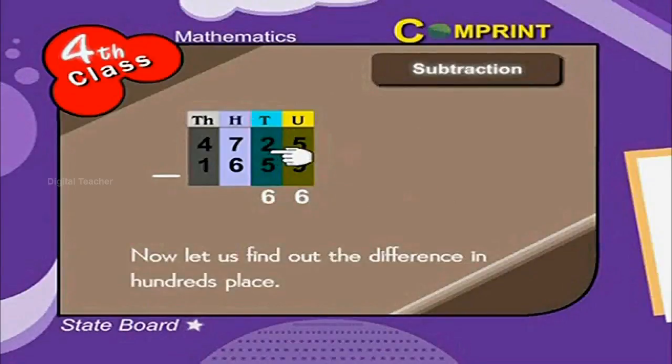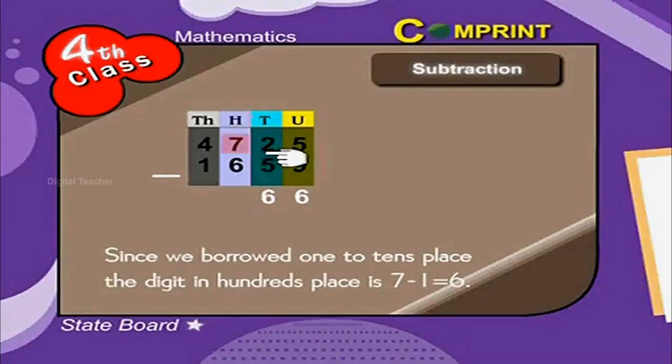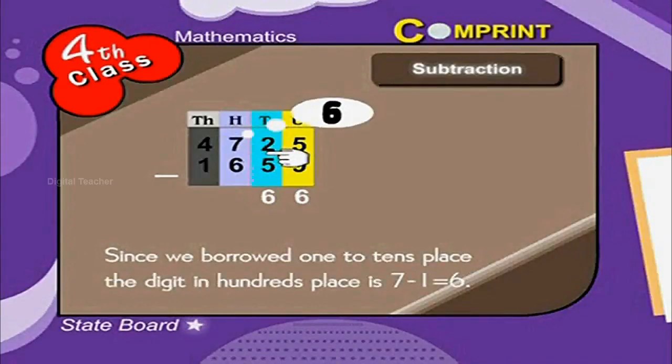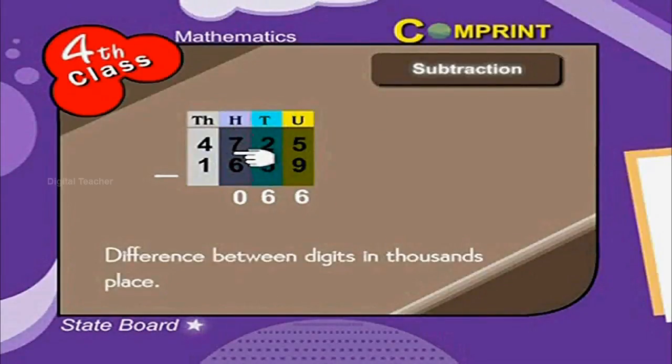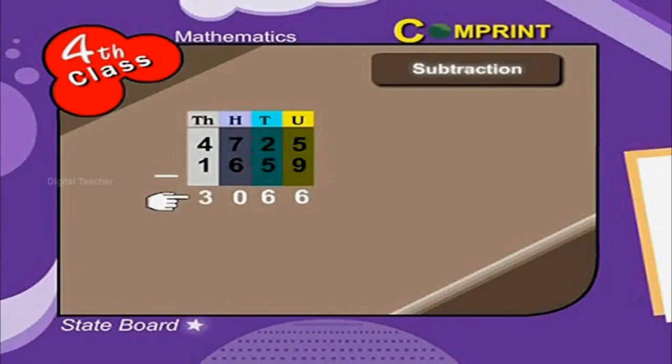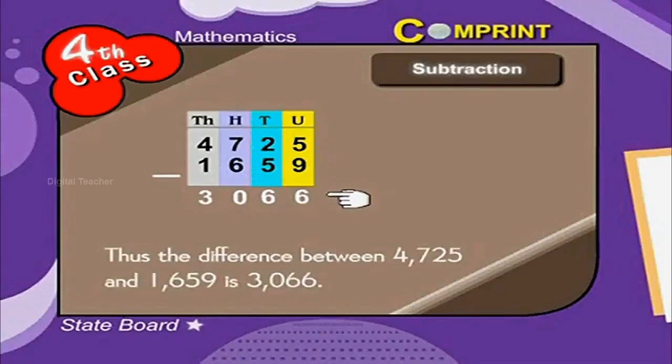Now, let us find out the difference in hundreds place. Since we borrowed one to tens place, the digits in hundreds place is 7 minus 1 is equal to 6. Now, 6 minus 6 is equal to 0. Difference between digits in thousands place is 4 minus 1 is equal to 3. Thus, the difference between 4725 and 1659 is 3066.